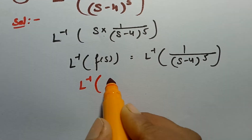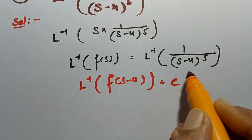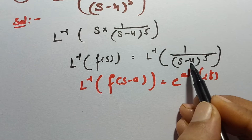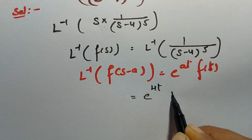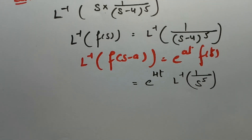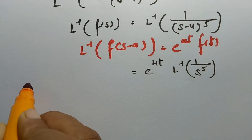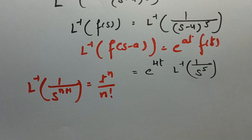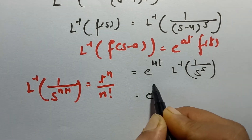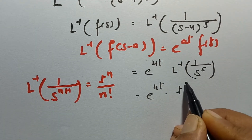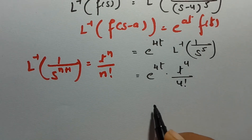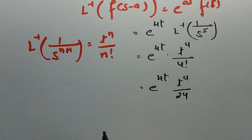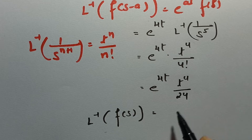We have to use the first shifting theorem. The first shifting theorem states that the inverse Laplace transform of F(s−a) is nothing but e^(at)·f(t). So using the first shifting theorem, I can write e^(4t) times the inverse Laplace transform of 1/s^5. The elementary formula is: inverse Laplace transform of 1/s^(n+1) is t^n / n!. Substituting here, the answer will be e^(4t) · t^4, and n=4, so it's 4 factorial. 4! = 1×2×3×4 = 24.